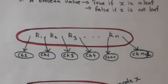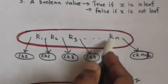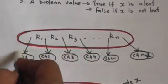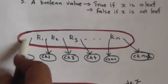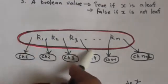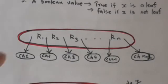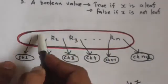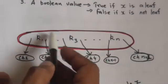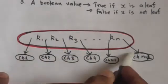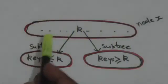If an internal node X in a B tree has n keys, then node X also contains n plus 1 pointers to its children. It means if a node has n keys then it has n plus 1 number of children. This is shown in this diagram — here this node of the B tree has n keys, so this node has n plus 1 number of children.